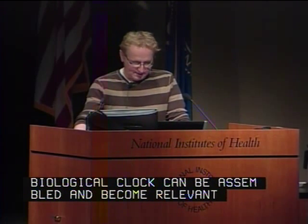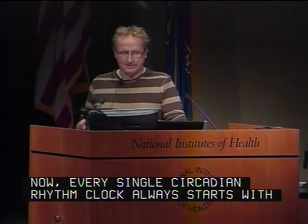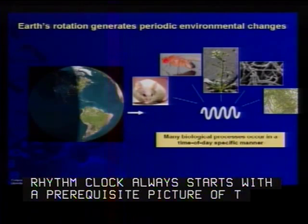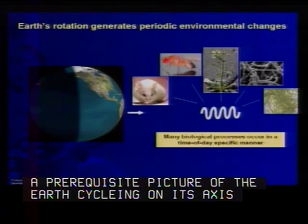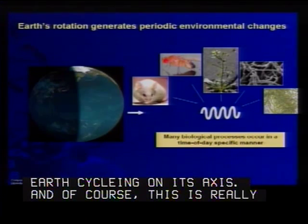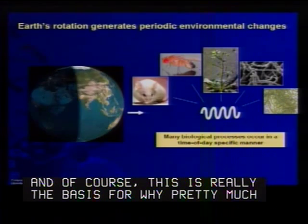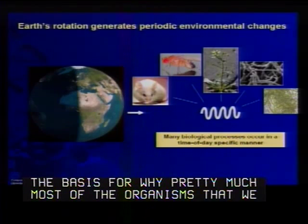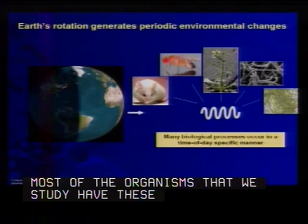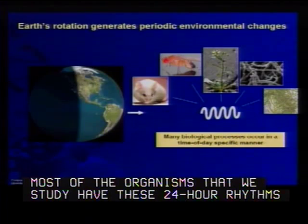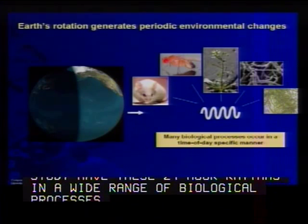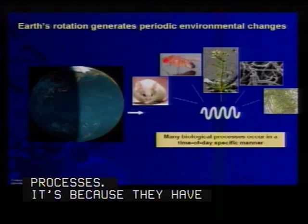Every single circadian rhythm talk always starts with a prerequisite picture of the earth cycling on its axis. This is really the basis for why pretty much most of the organisms that we study have these 24-hour rhythms in a wide range of biological processes. It's because they've evolved essentially on a planet that spins on its axis.